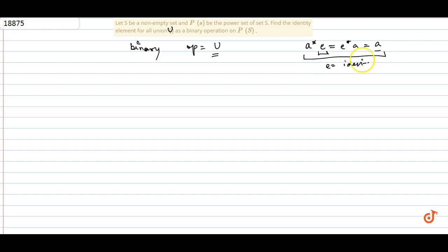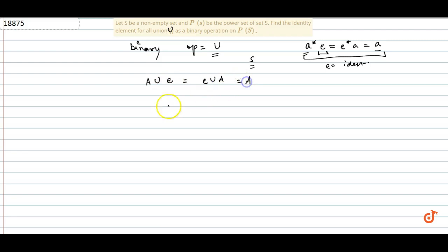अब हमारे पास set S है। अगर A एक subset है S का और operation union है, तो identity element की property होती है: A ∪ e = e ∪ A = A। यानी A union e equal to A।